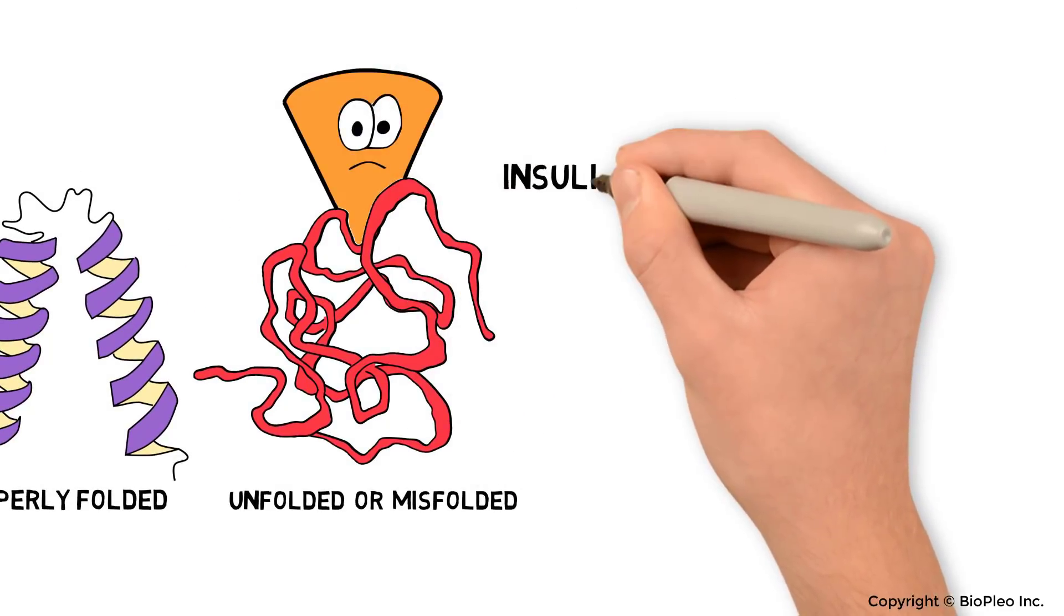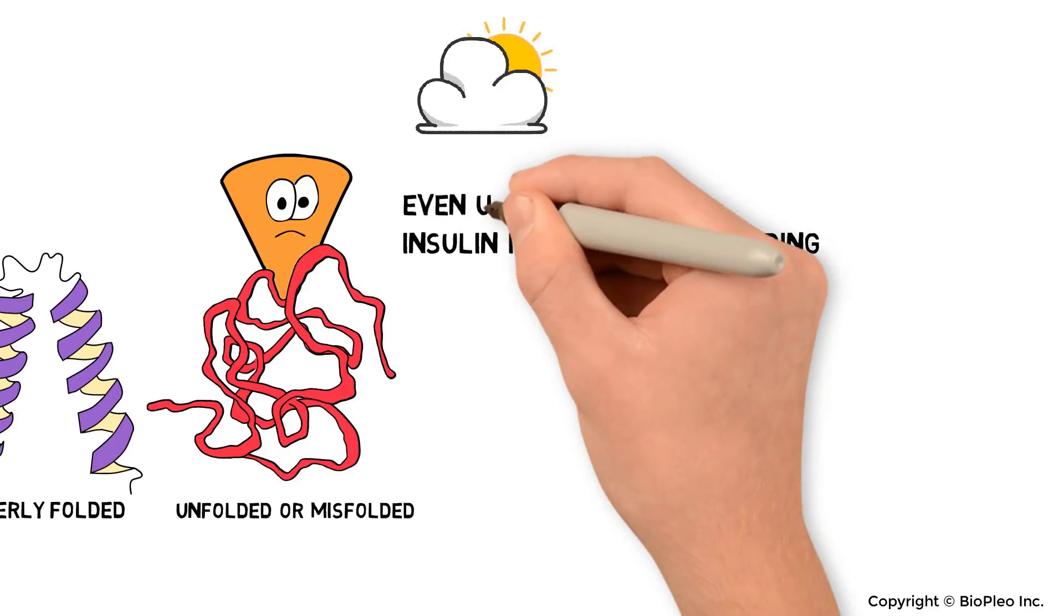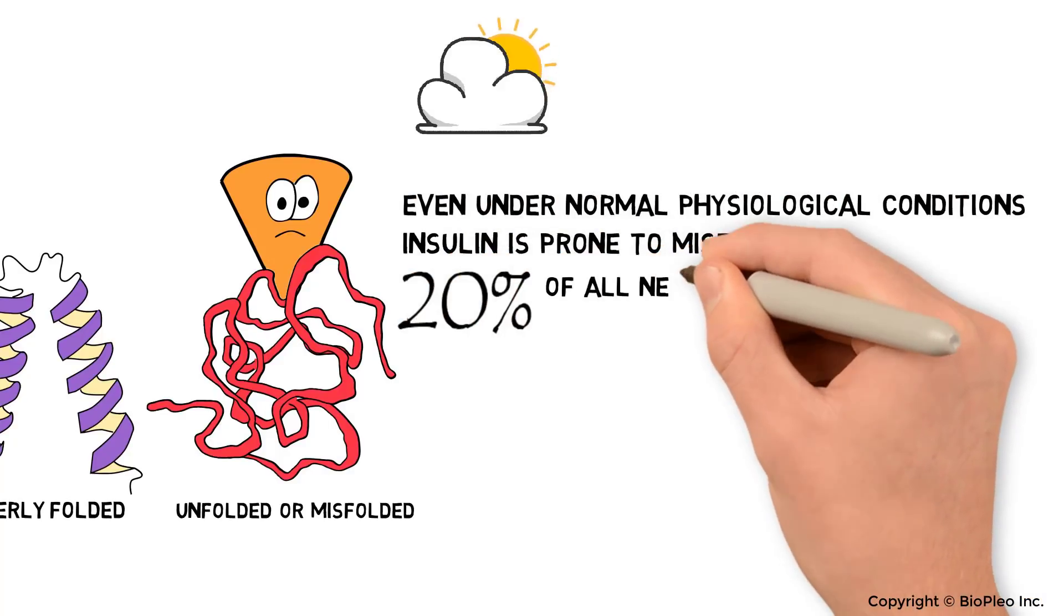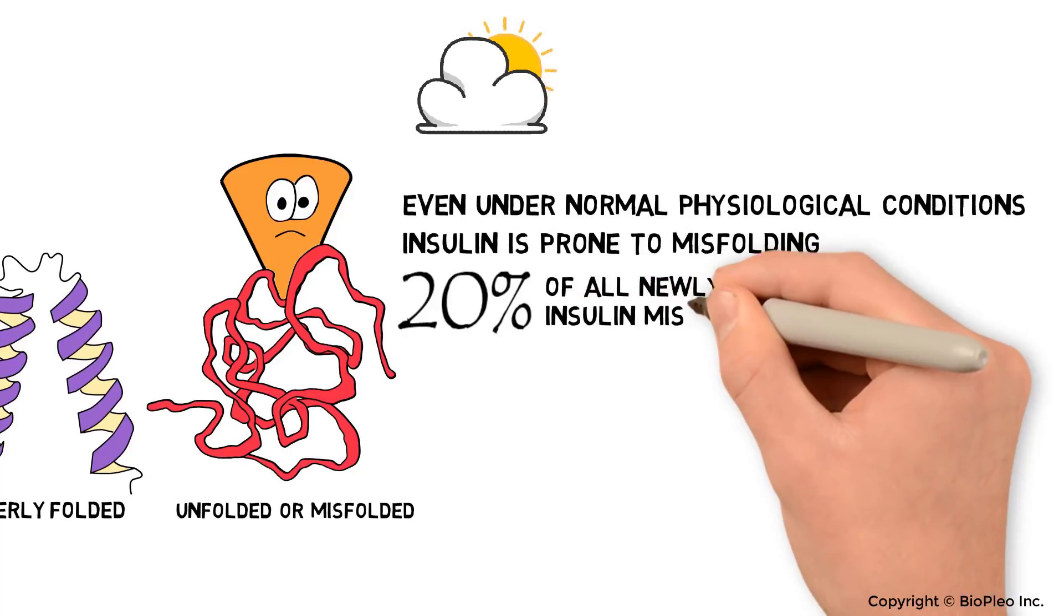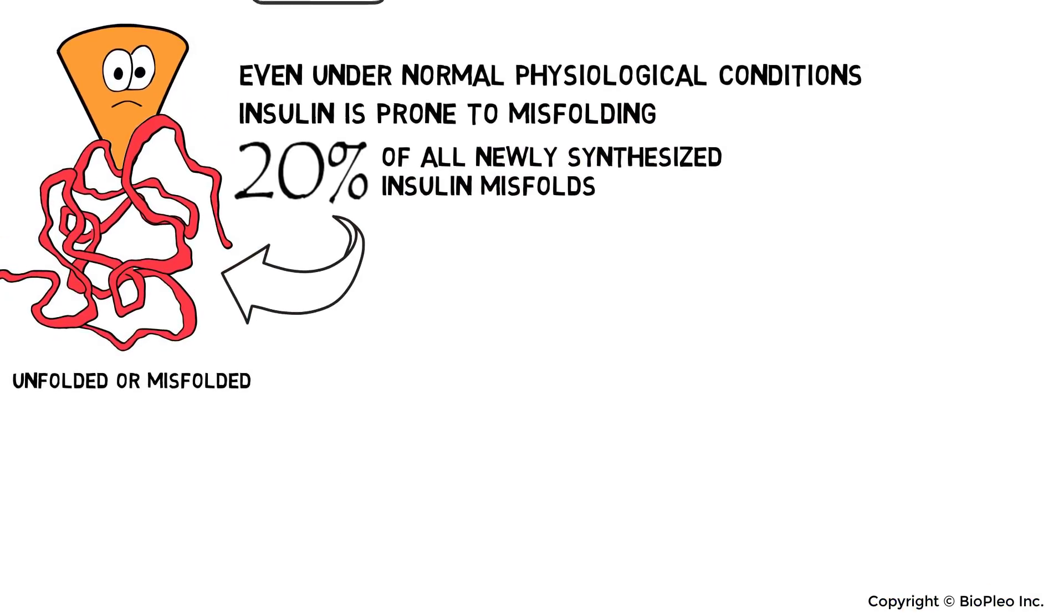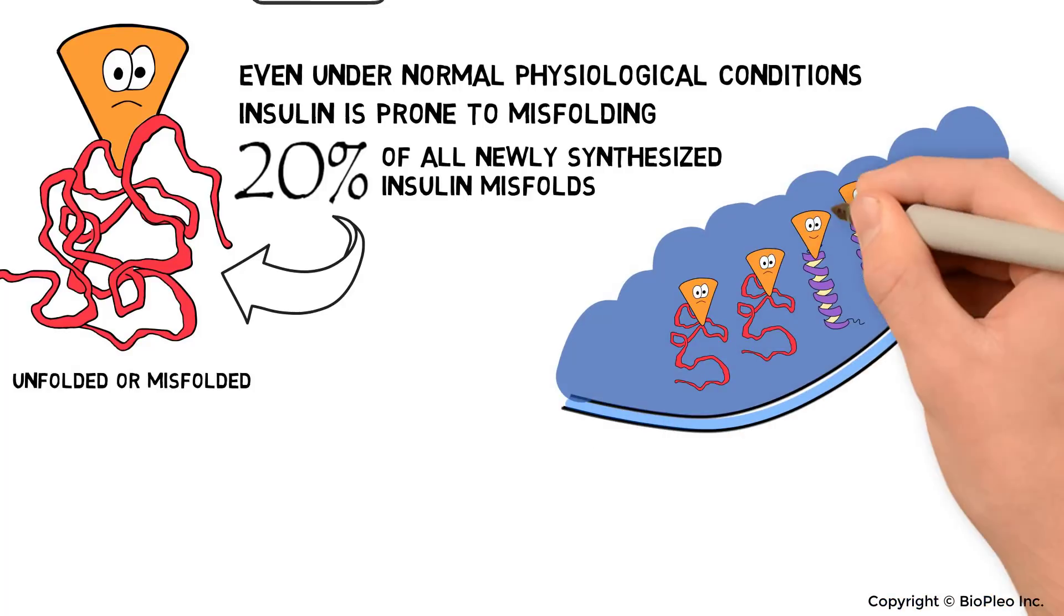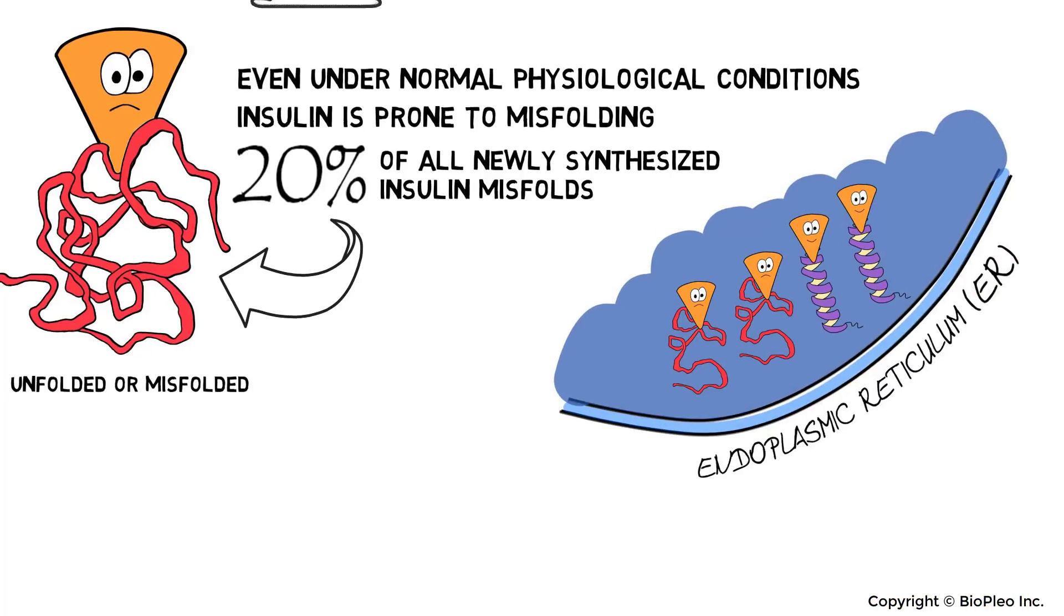Insulin is particularly prone to misfolding. Surprisingly, even under normal physiological conditions, 20% of all newly synthesized insulin misfolds. The correct folding or misfolding of insulin occurs in an internal chamber called the endoplasmic reticulum, or ER.